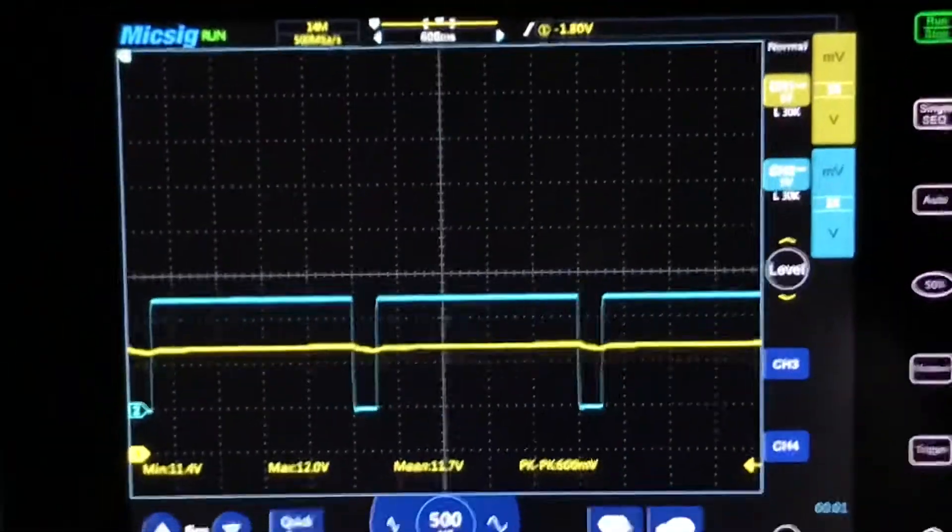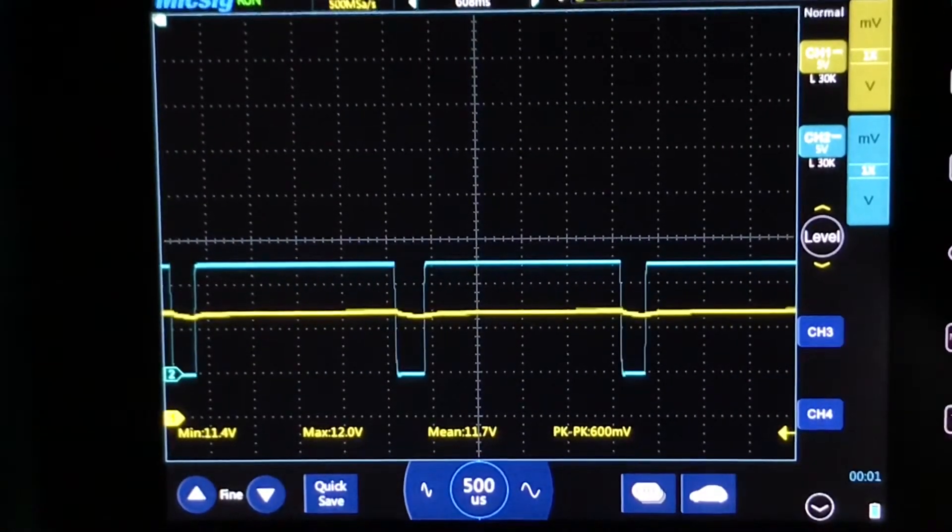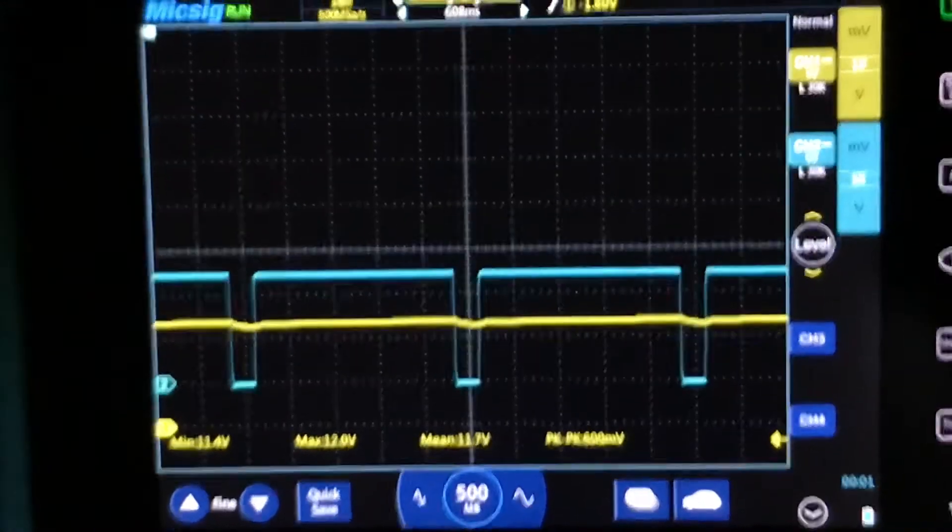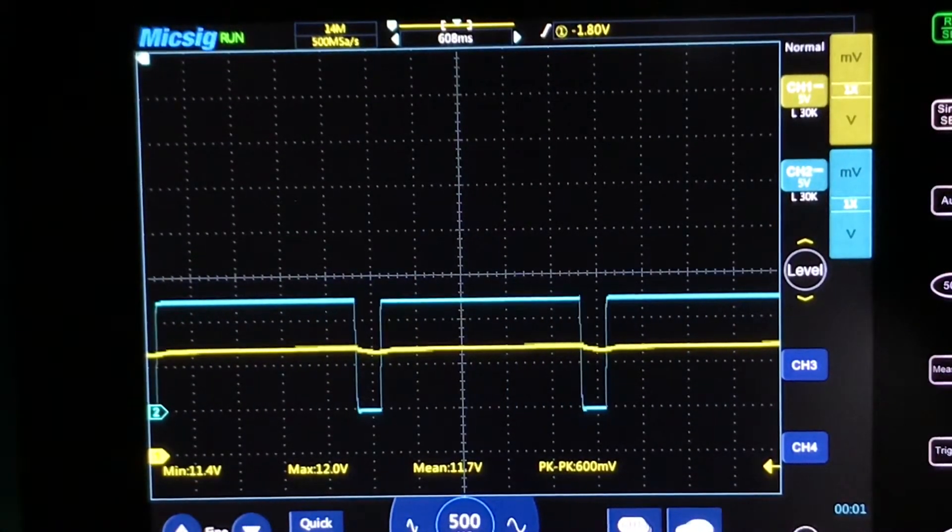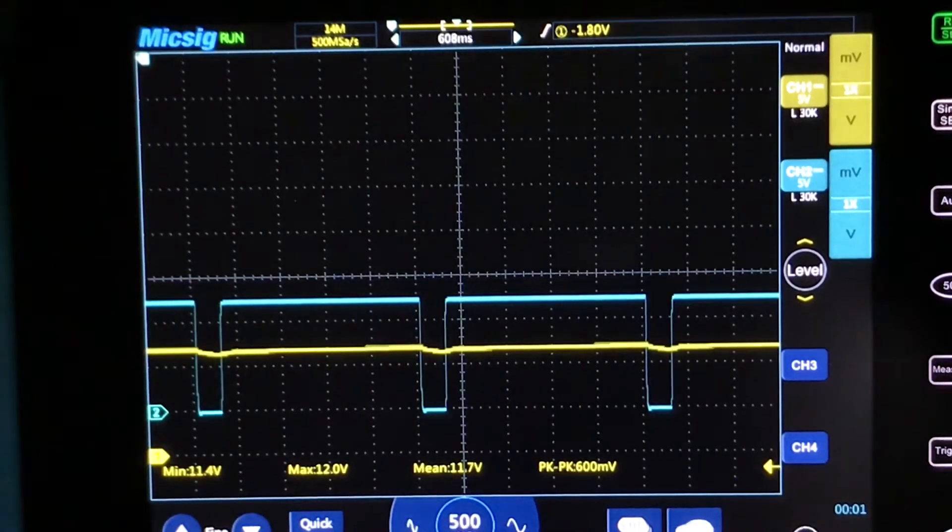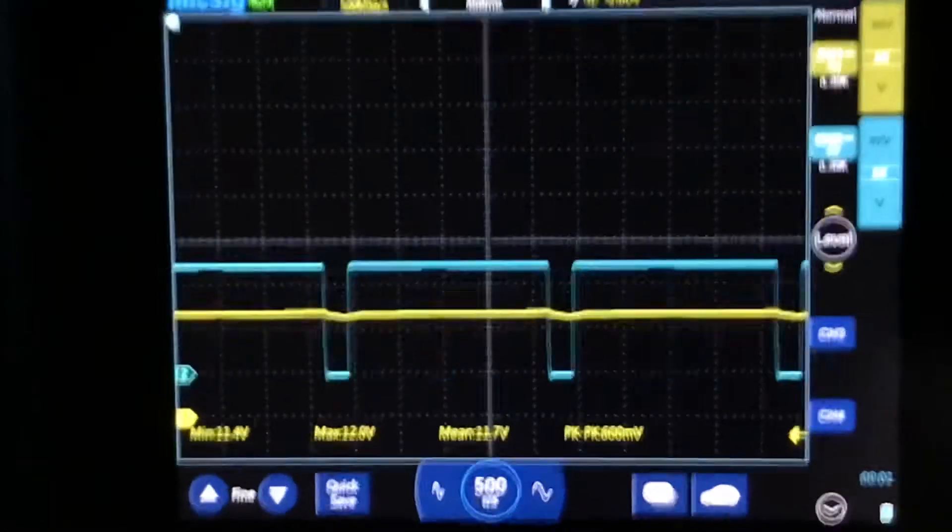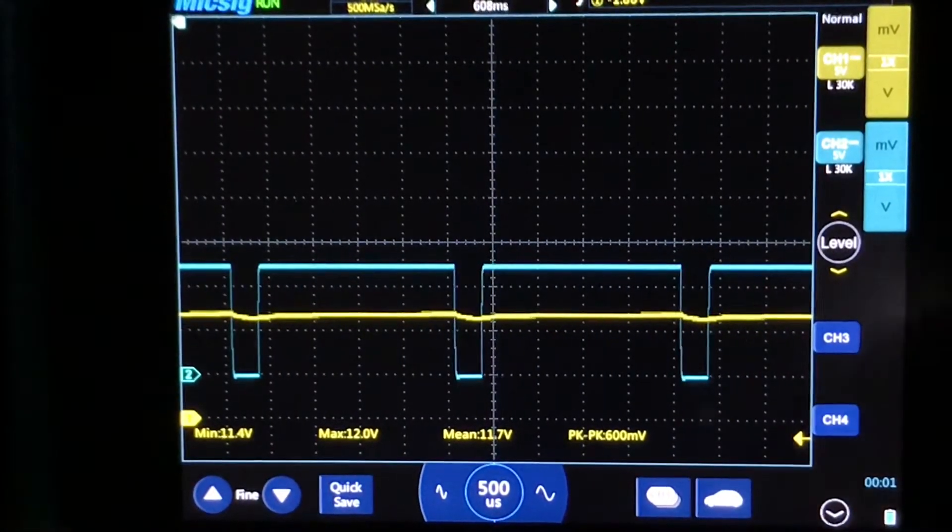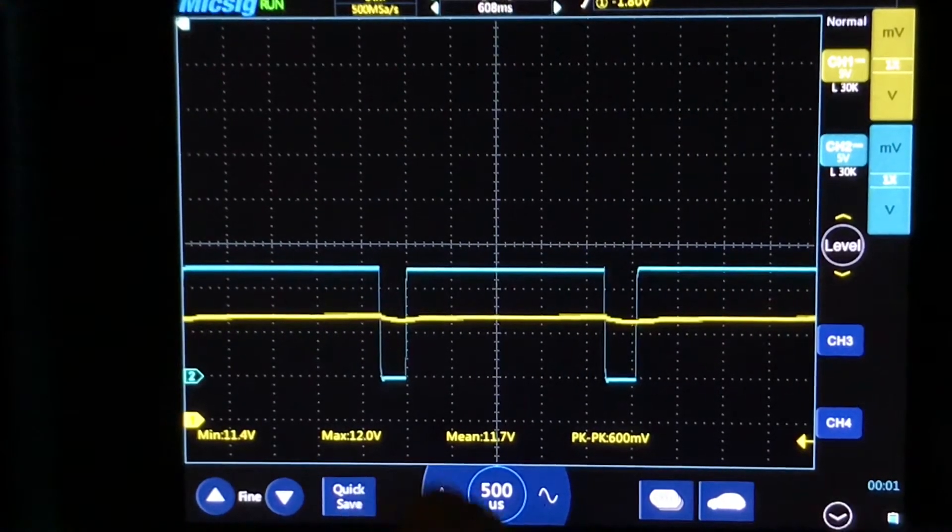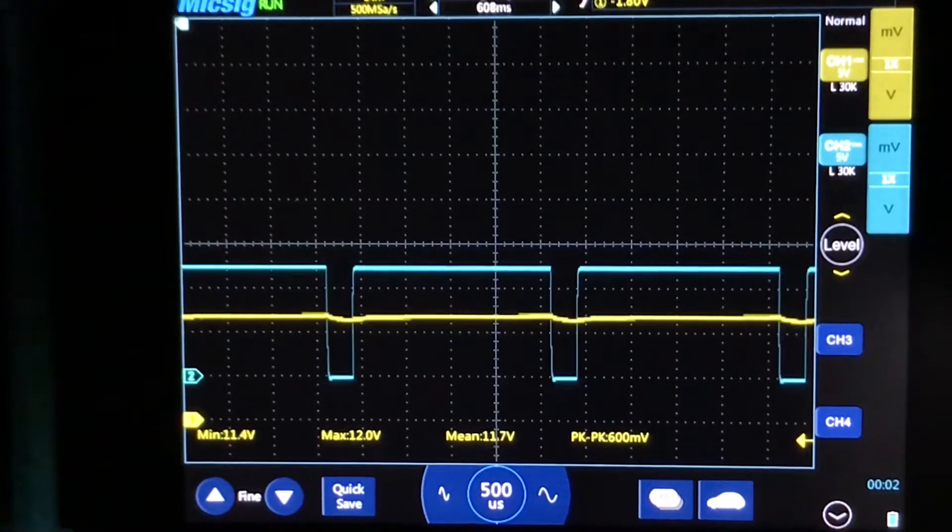All right, let's see. Time base, we're at 500 microseconds. Yeah, μs would be microseconds, and then under that would go ns which would be nanoseconds, ms would be milliseconds, and s would be seconds. So 500 microseconds.